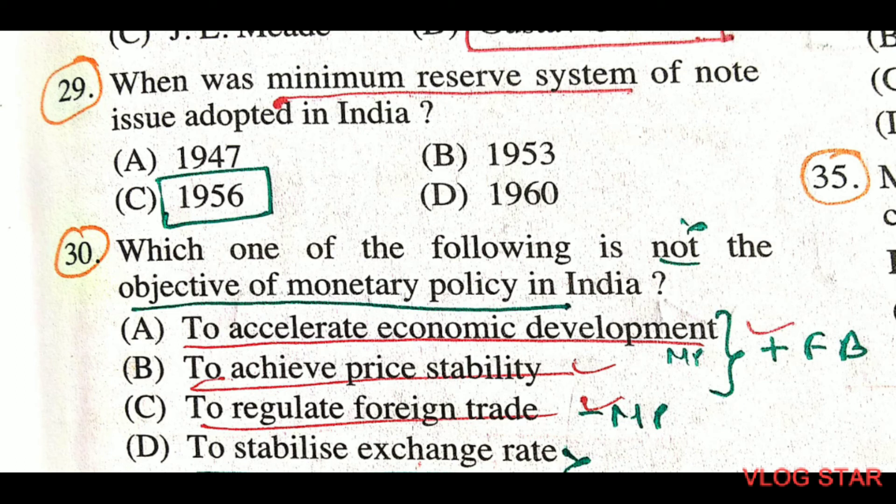Question number 30: which of the following is not the objective of monetary policy in India? To stabilize the exchange rate is not the objective. The other three objectives are: to accelerate economic development, to achieve price stability, and to regulate foreign trade. Accelerating economic development and achieving price stability are parts of both monetary and fiscal policy, while regulating foreign trade is only part of monetary policy.